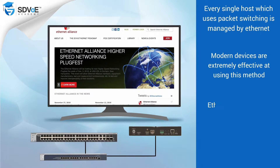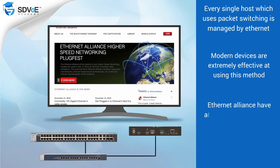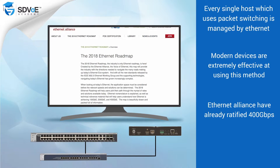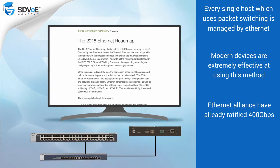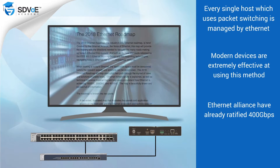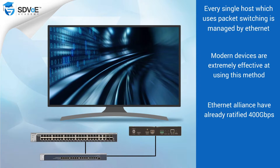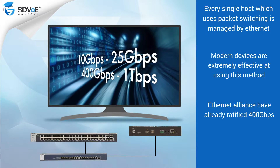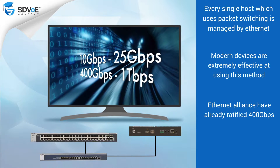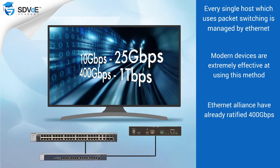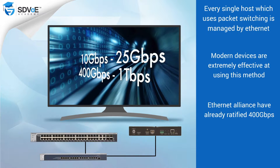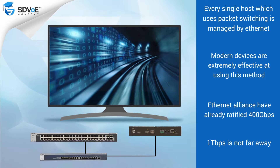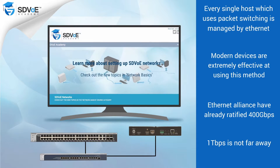The Ethernet Alliance have already ratified specifications for 400 gigabits per second, with 10 gigabits per second and 25 gigabits per second already commonplace within enterprise and data centers. Bandwidth is cheap and 1 terabit per second is really not far away.